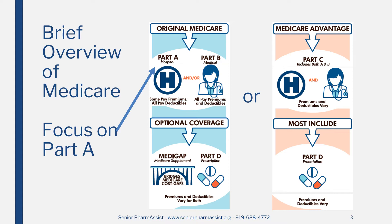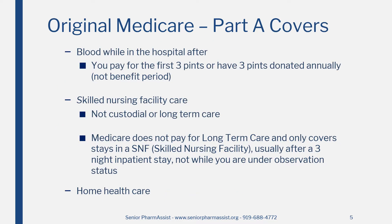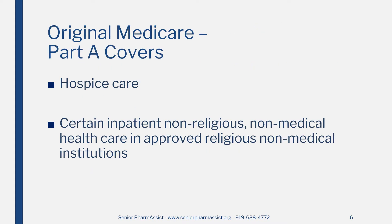This video covers Medicare Part A, Hospital Coverage. Medicare Part A, usually called Hospital Coverage, covers your medical costs while you are in the hospital after you have been admitted. This includes inpatient hospital care, and sometimes what follows hospitalization, such as rehabilitation and blood tests conducted while you are in the hospital. Part A also covers the cost of blood while you are in the hospital after you have paid for the first three pints or have three pints donated annually, the cost of staying in a skilled nursing facility, home health care, hospice care, and certain inpatient non-religious, non-medical health care, and approved religious non-medical institutions.